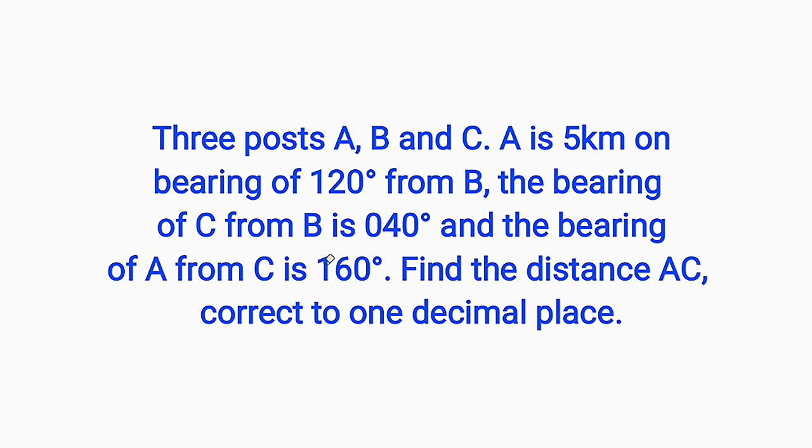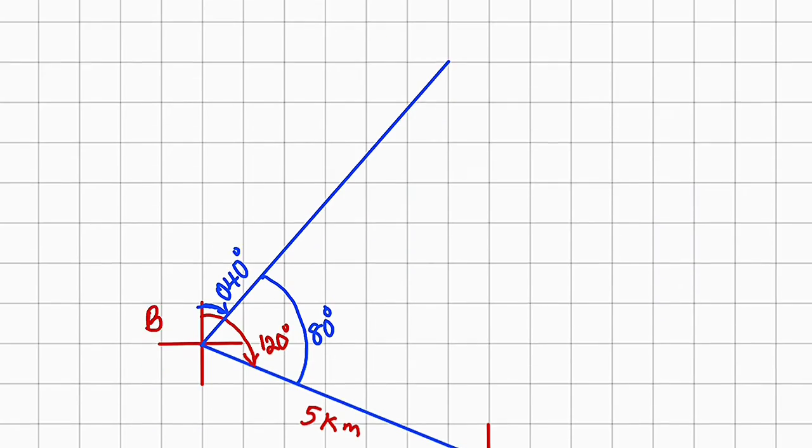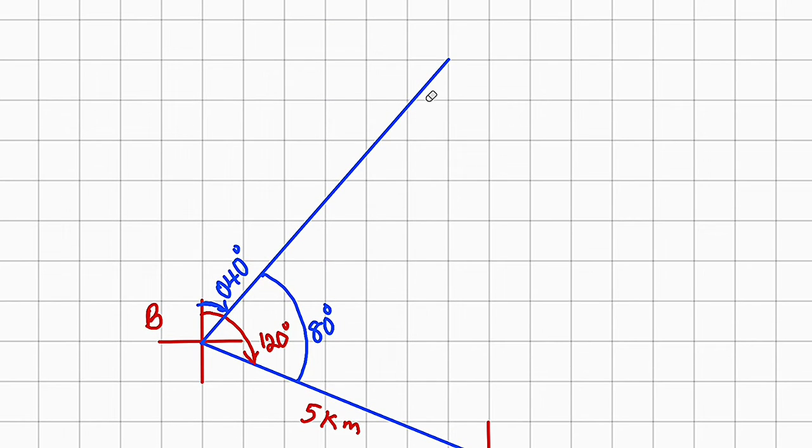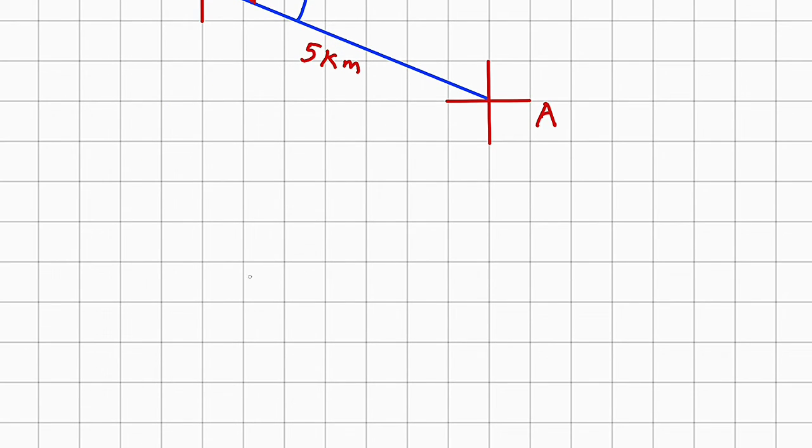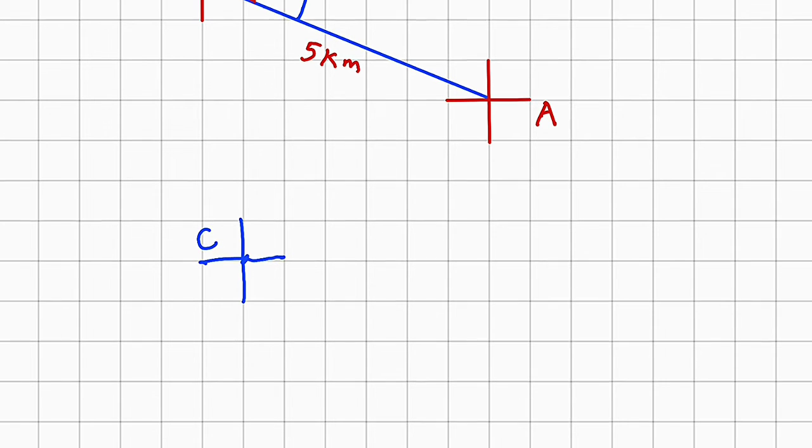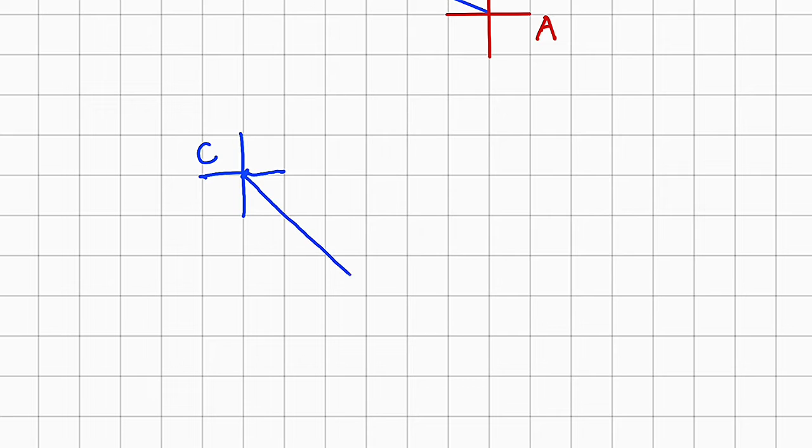The bearing of A from C is 160 degrees. So we need to construct 160 degrees from C down to A. Already we have A here, and we don't know the location of C because the distance is not given from B down to C. So let me do something for you. Let's assume we have C here, somewhere here, and we are asked to construct 160 from this particular C, suppose this is C, down to A.